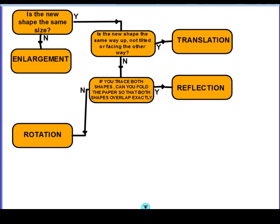Pause the video now. Here are the answers. If the shape has changed size in any way then it's some form of enlargement, whether it's been made bigger or smaller. If the shape hasn't changed size but it's moved from one position to another without being twisted or tilted, then it's simply a translation. If it hasn't changed size but has been tilted or twisted, then it's either reflection or rotation. Use tracing paper — trace both shapes and try to fold the paper so both shapes overlap exactly. If you can do that, it's a reflection; if you can't, it's a rotation.